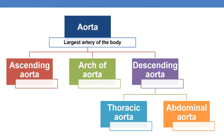Before discussing the CPT coding guidelines, let us first briefly discuss the anatomy of the aorta. The aorta is the largest artery of the body and there are three principal branches: the ascending aorta, the arch of the aorta, and the descending aorta. The descending aorta is again of two types: thoracic aorta and abdominal aorta.